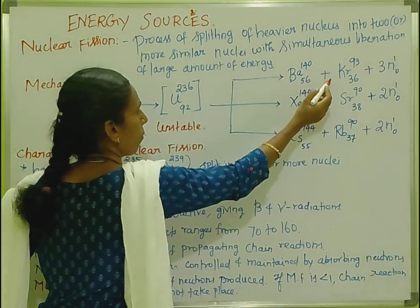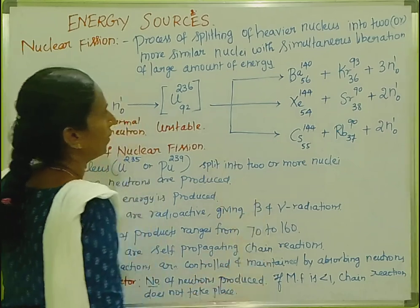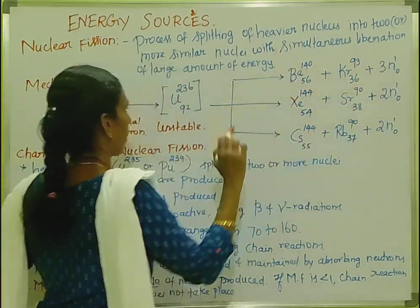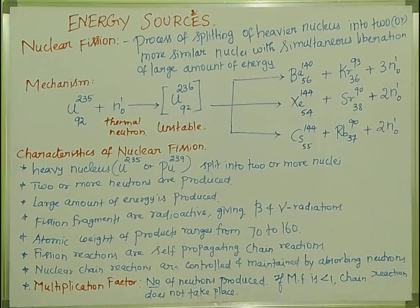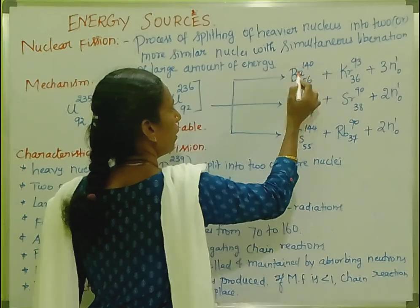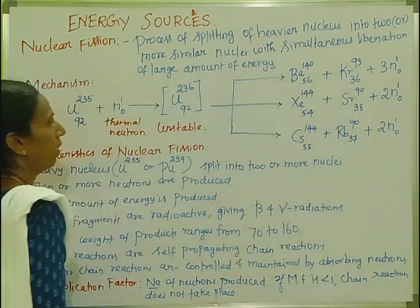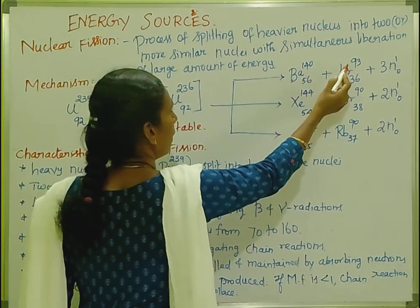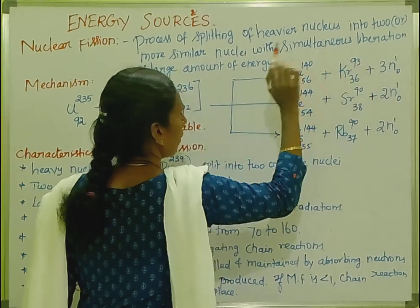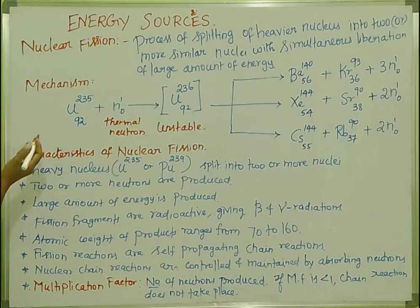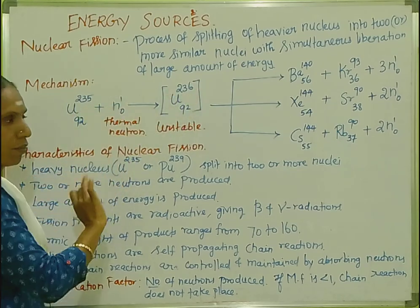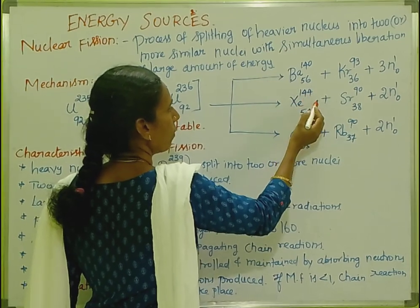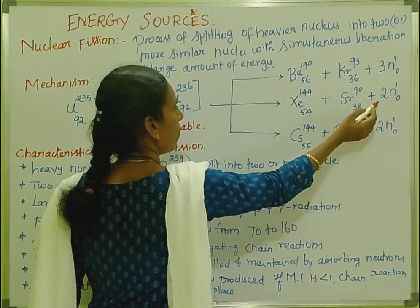The similar nuclei produced are: Barium-56-140 plus Krypton-36-93, plus 3 neutrons. Another possible split gives Xenon-54-144 plus Strontium-38-90, plus 2 neutrons. Or Cesium-55-144 plus Rubidium-38-90, plus neutrons and energy released.